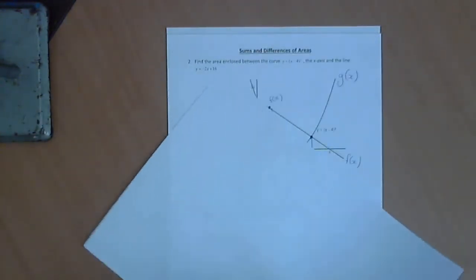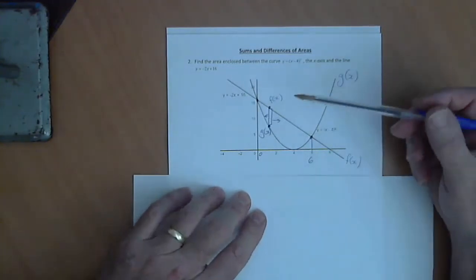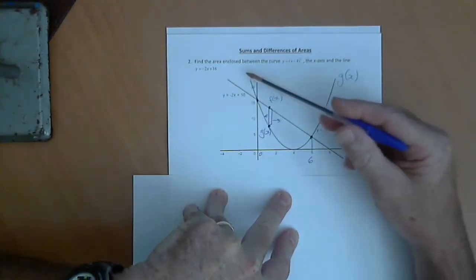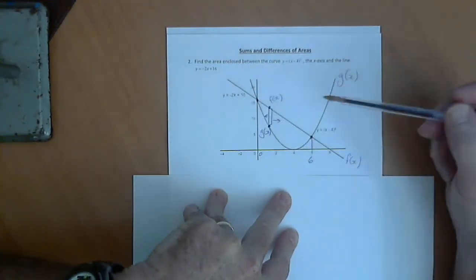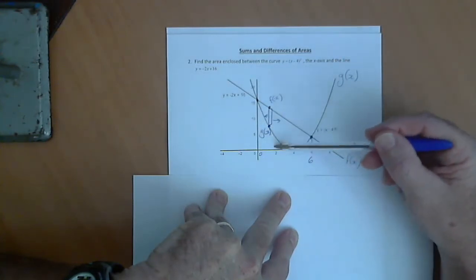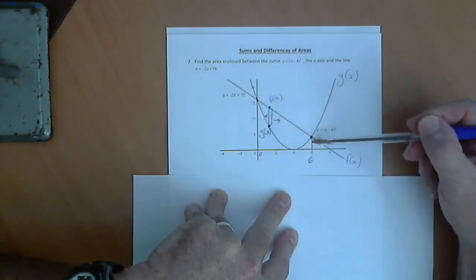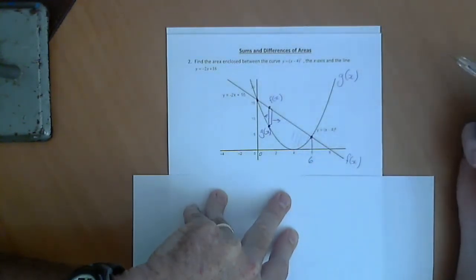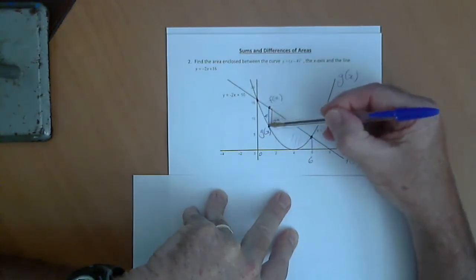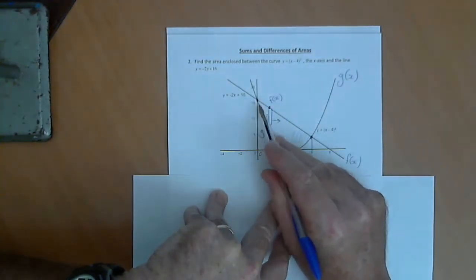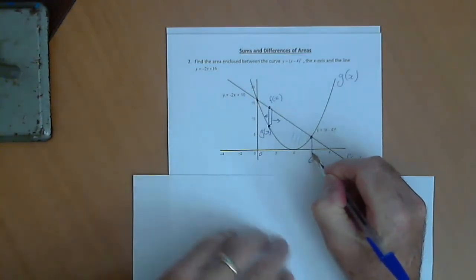The second type of problem is where we're finding the area between two curves. In this case, we've got a straight line and a parabola. One option would be to work out the area of the trapezium, work out the area underneath the curve, and then subtract them to work out the area in between. Alternatively, we can work out the length of the strip in between the two curves, and then integrate that between the two boundary values of x equals 0 and x equals 6 in this case.